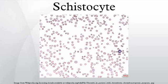A normal schistocyte count for a healthy individual is less than 1%. A count above 1% is most often found in thrombotic thrombocytopenic purpura, although they are more often seen within the range of 3 to 10% for this condition. A schistocyte count of 1% is suggestive of the disease.